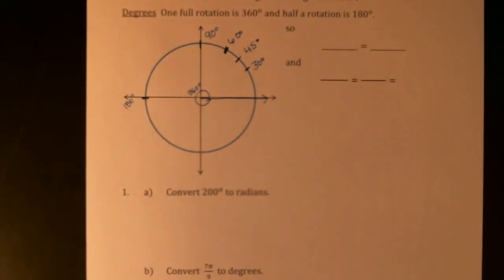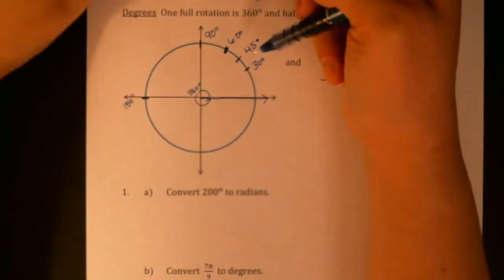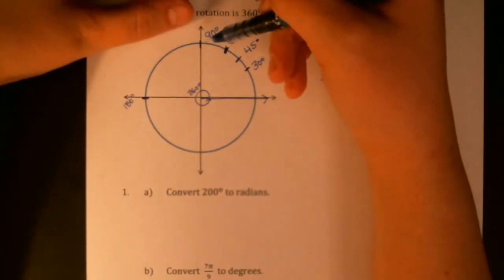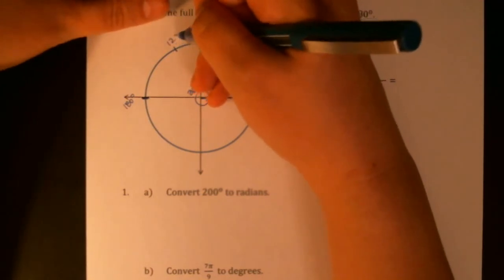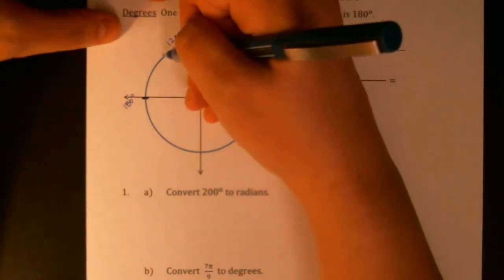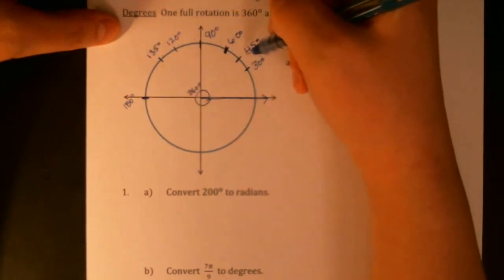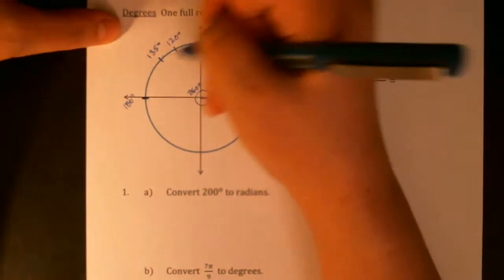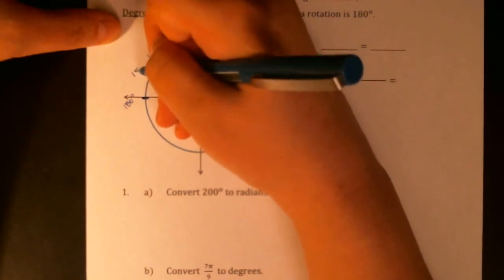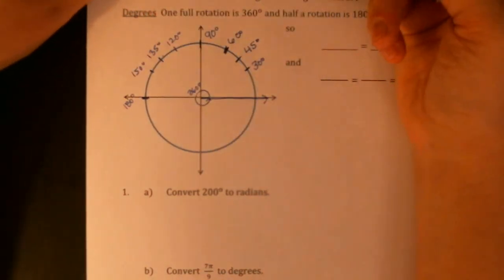We can continue counting around in this fashion, so it's interesting to know what 90 plus 30 is, that would be 120. 90 plus 45 is 135, 90 plus 60 is 150. We can do this around the entire circle.